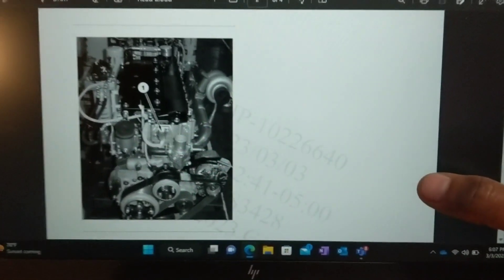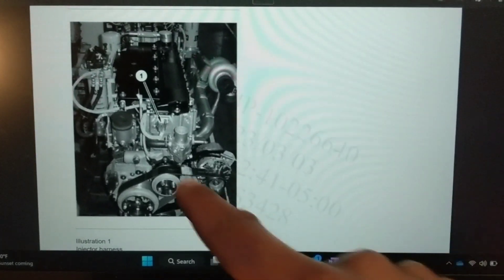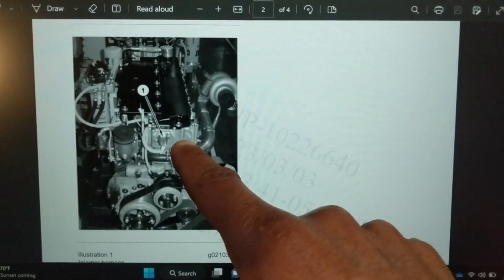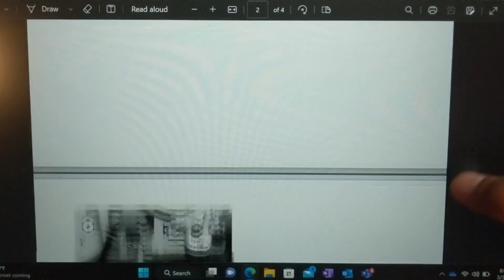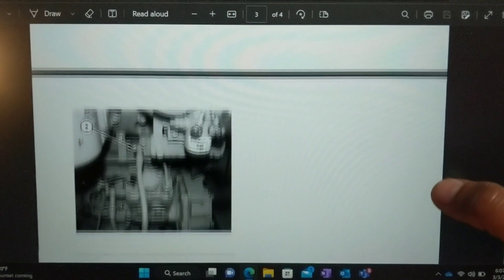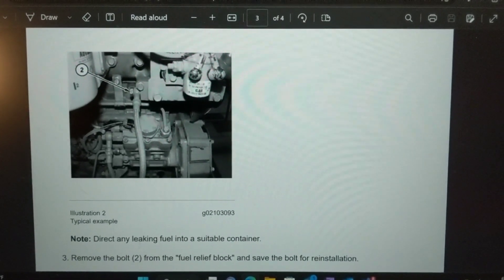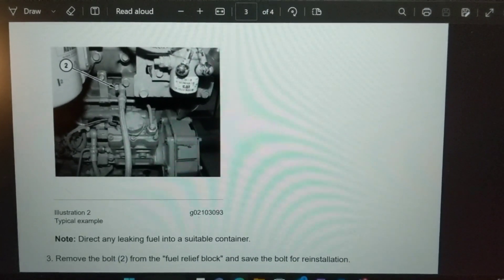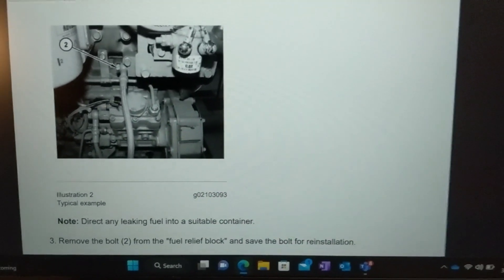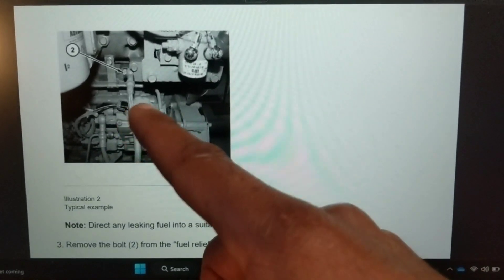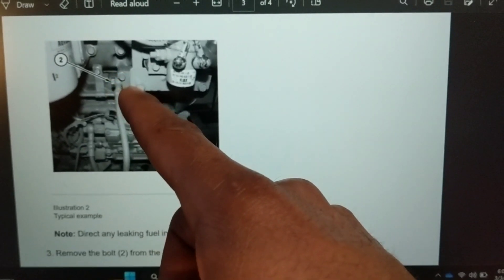The test procedure is as follows: disable your injectors by unplugging the injector harness there. And then on your fuel block, which happens to be on the right-hand side of the engine if you're on an excavator and you're looking at the engine, it'd be on the right-hand side on the fan side anyways, just take that return line off, take the banjo bolt out.